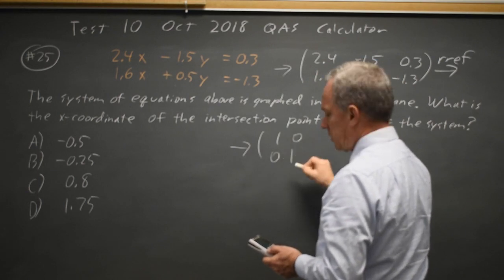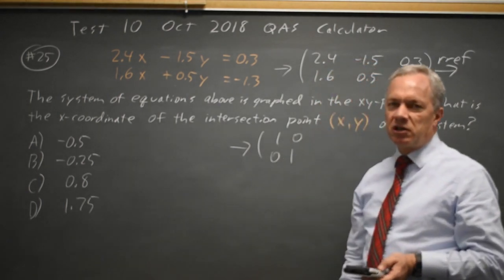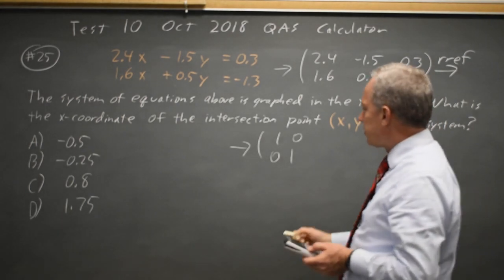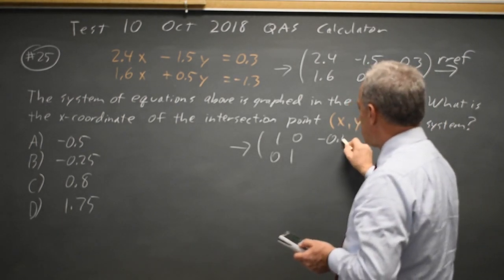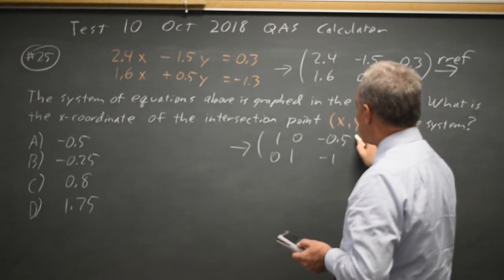Reduced row echelon form gives me this matrix, 1, 0, 0, 1, which you'll always get those two columns on a 2 by 3, followed by the solution, negative 0.5 and negative 1.